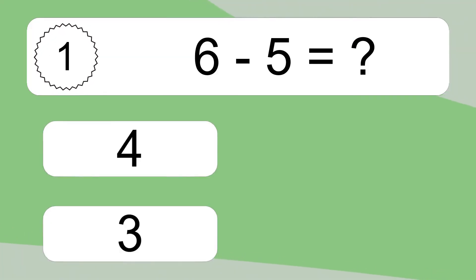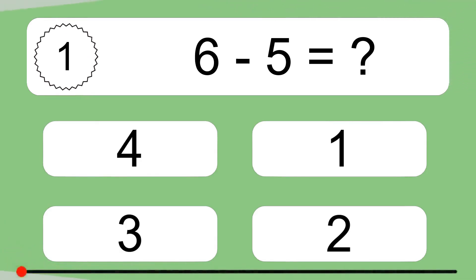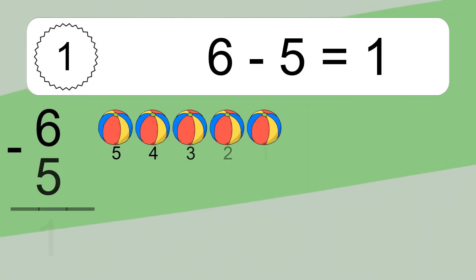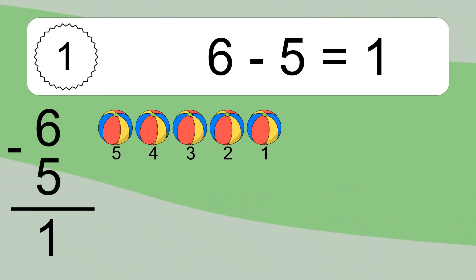6 minus 5 equals what? 6 minus 5 equals 1. Let's count it: 5, 4, 3, 2, 1.